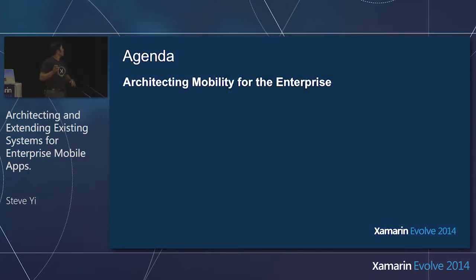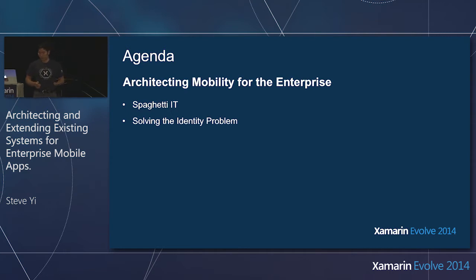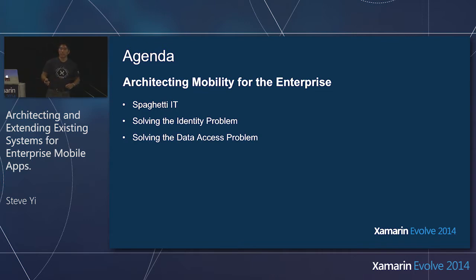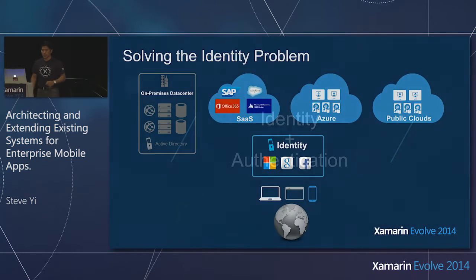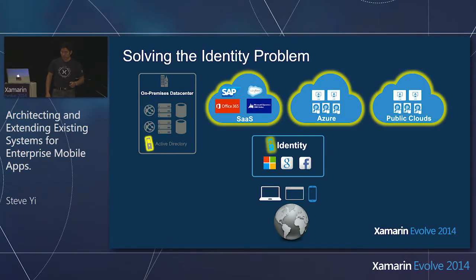What we're going to talk about today: we've talked about spaghetti IT, but I want to present a strategy for solving that identity problem, and another for solving that data access problem — how we access data from different data sources. On-premises data is never going away, or at least for the foreseeable future. So how do we get that on-premise data back onto a mobile device running out in the wild?